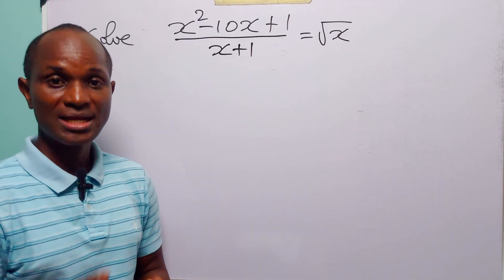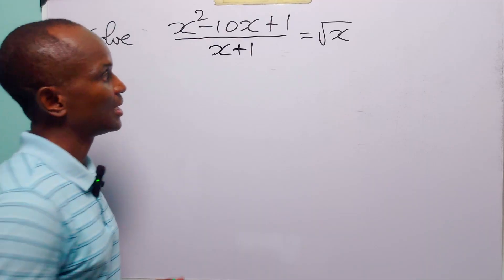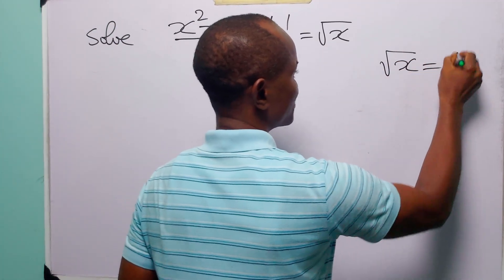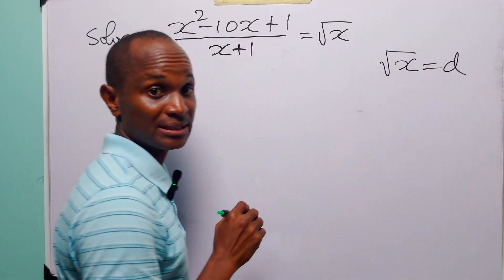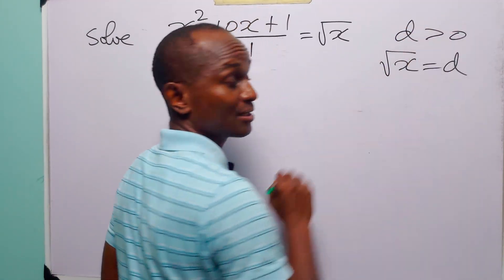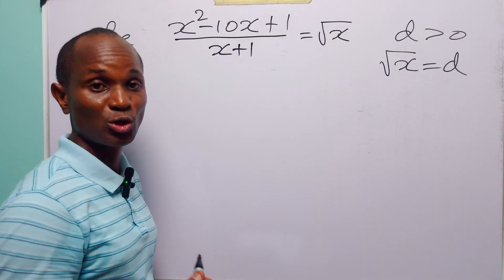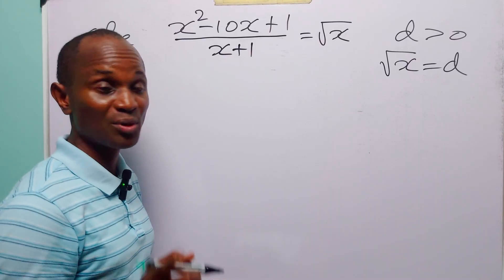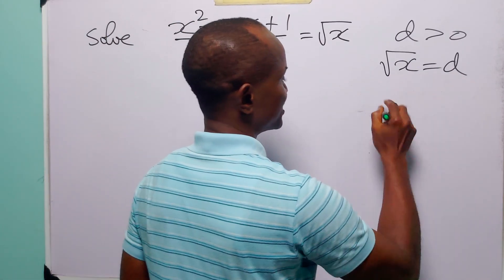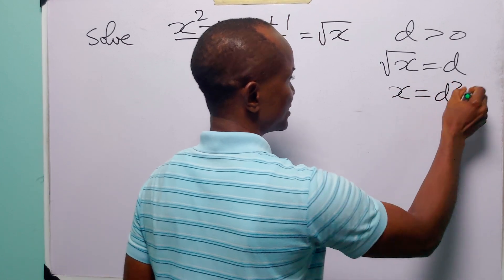To solve this problem, let us begin with a very simple substitution. Let the square root of x be equal to the letter d. Of course, d must be greater than zero because the square root of a positive real number must always be positive. When we square both sides of this equation, we have that x is equal to d squared.